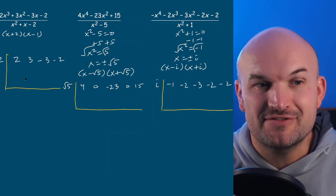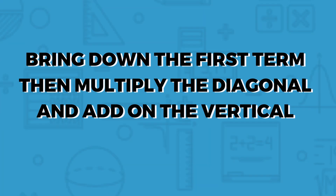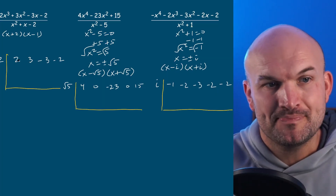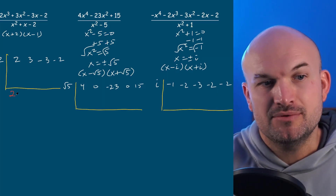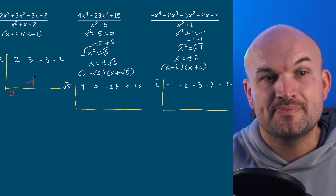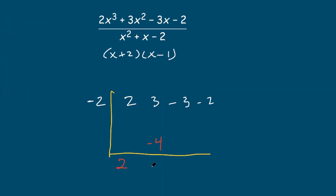To use the synthetic division algorithm, remember we always bring down the first term, then multiply on the diagonal and add on the vertical. For the first example: bring down the two, two times negative two is negative four, three plus negative four is negative one, negative one times negative two is positive two, that leaves negative one, and negative one times negative two is positive two — which adds to zero.